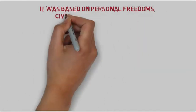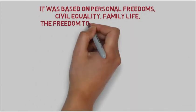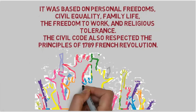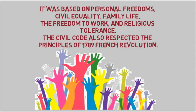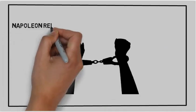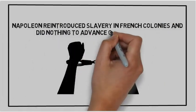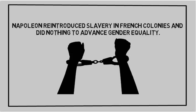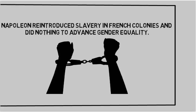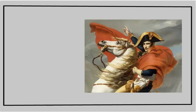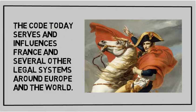To summarize, on one hand, the Napoleonic Code was based on the ideals of freedom, equality, and tolerance, and it respected the principles of the French Revolution. But on the other hand, Napoleon restricted freedom by reintroducing slavery in French colonies, and he did nothing to advance gender equality. Though, for all its goodness and positive effects, the code influenced many countries to introduce a formal legal system.